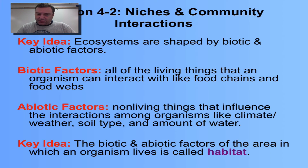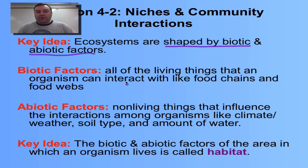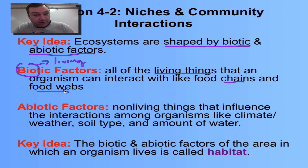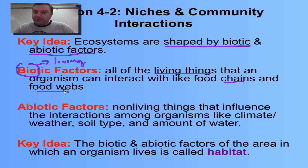The first key idea is that ecosystems are shaped by biotic and abiotic factors. Biotic factors are all of the living things — remember, 'bio' simply means living. These are all the living things that an organism is going to come in contact with, so think of food chains and food webs. An animal will come in contact with the animals trying to eat it and the animals it's trying to eat, especially if it's a carnivore. If you're a plant, you'll come in contact with other plants, the animals trying to eat you, and the animals trying to pollinate you. These are all the biotic factors — all the living things you find in an ecosystem.